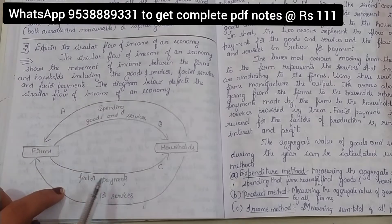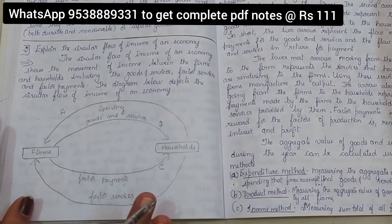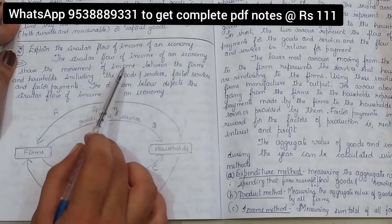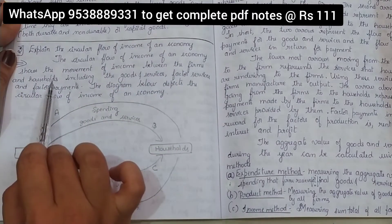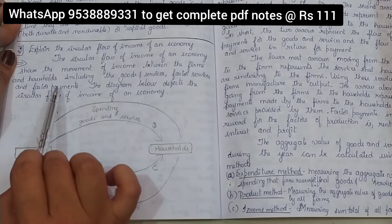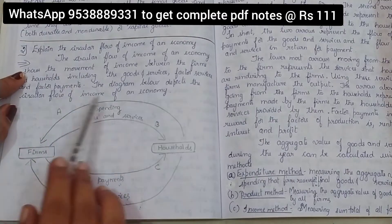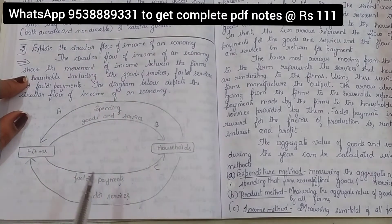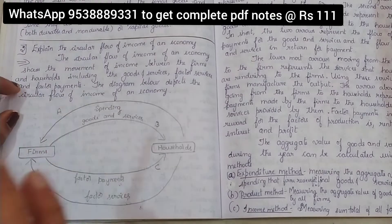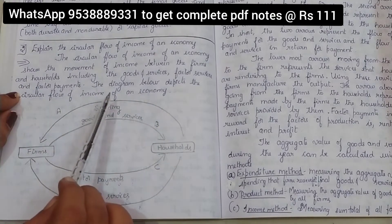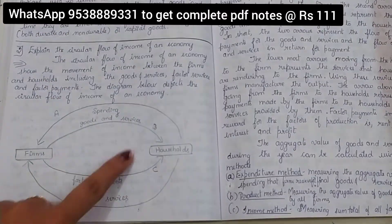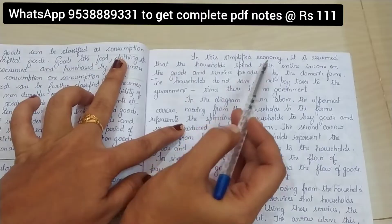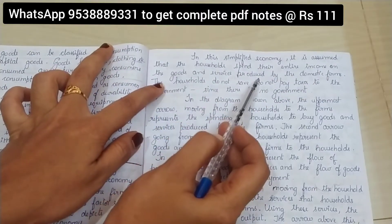The circular flow of income of an economy shows the movement of income between the firms and households, including the goods and services, factor services, and factor payments. The diagram below depicts the circular flow of income of an economy. In this simplified economy, it is assumed that the households spend their entire income on the goods and services produced by the domestic firms.